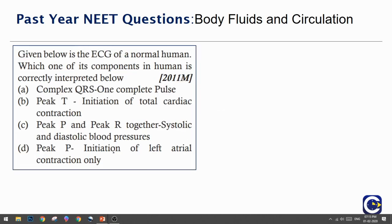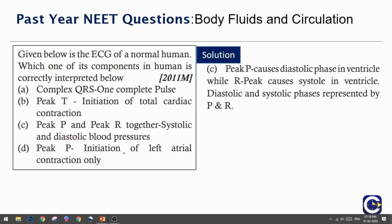Given below is the ECG of a normal human. Which component is correctly interpreted: QRS is one complete pulse, peak T is initiation of total cardiac contraction, peak P and peak R together represent systolic and diastolic blood pressures, or initiation of left atrial contraction is peak P. We know P represents contraction of atria and QRS represents contraction of ventricles following the contraction of atria.